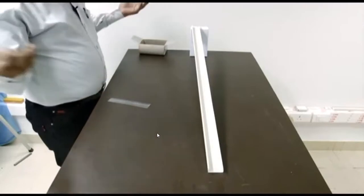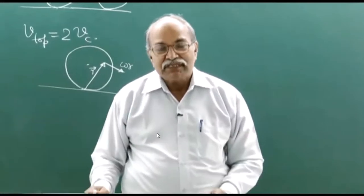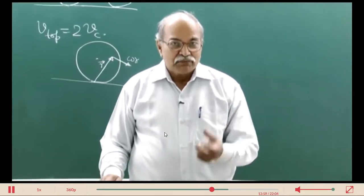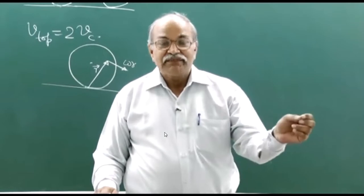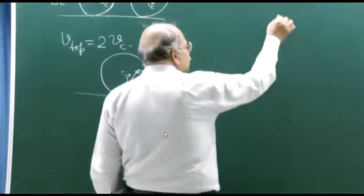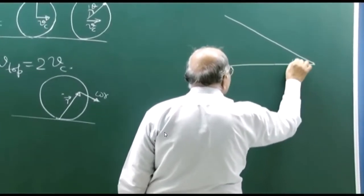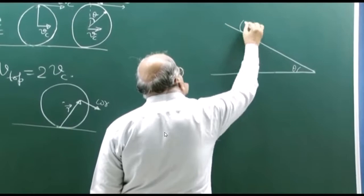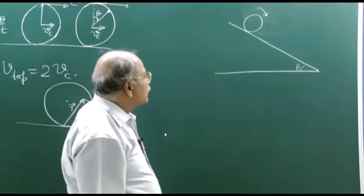The time taken by the balls to cover the length of the inclined plane does not depend on the size, mass, material of the ball, or friction coefficient between the ball and the track. Let us do some analysis to understand why. Suppose you have this inclined plane at angle theta with the horizontal, and the ball is released from some point and rolls down the inclined plane.